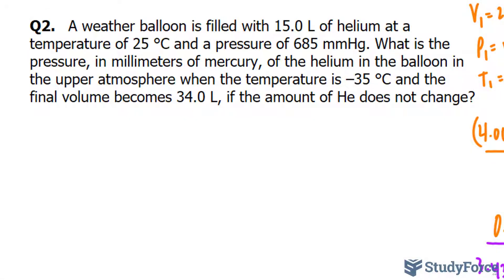Let's start off by writing out everything we know. We've been told the volume initially, that's 15.0 liters. The pressure, unlike in question number one, is given in mmHg. So I'll write down 685 mmHg and the temperature given in Celsius is 25 degrees Celsius.